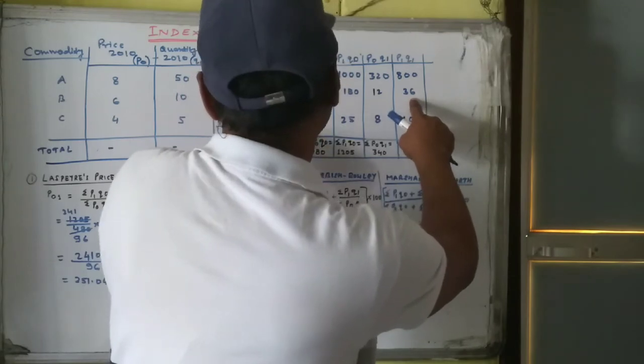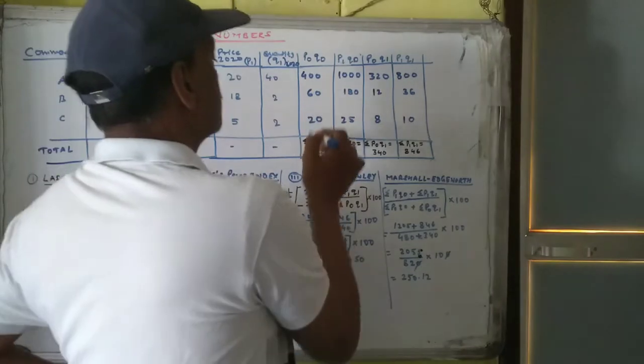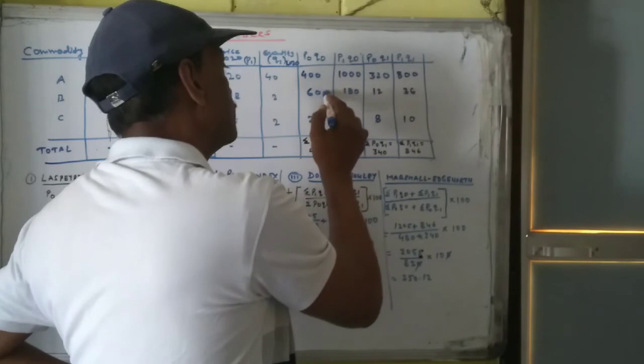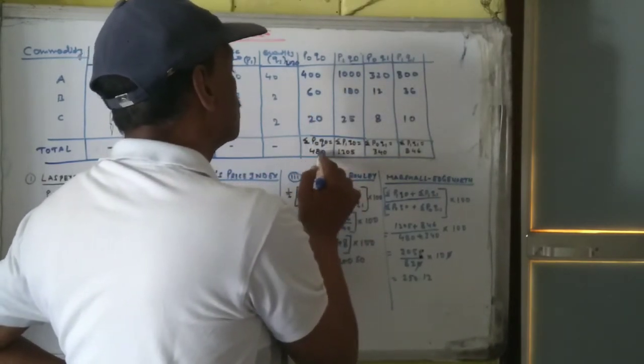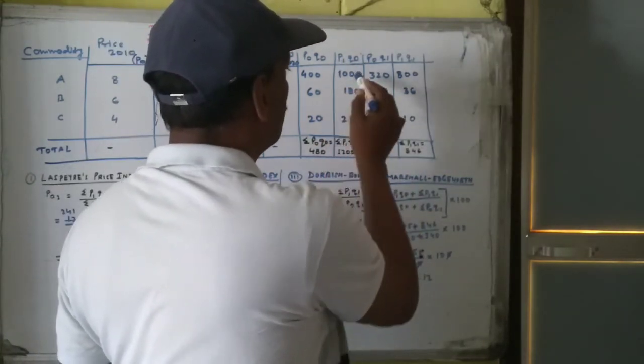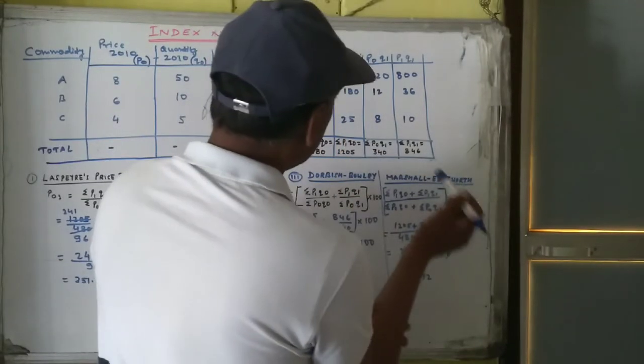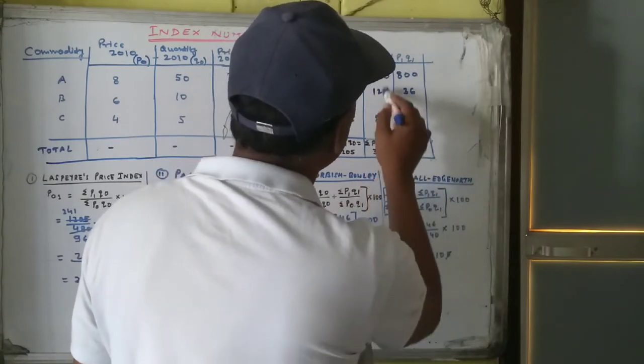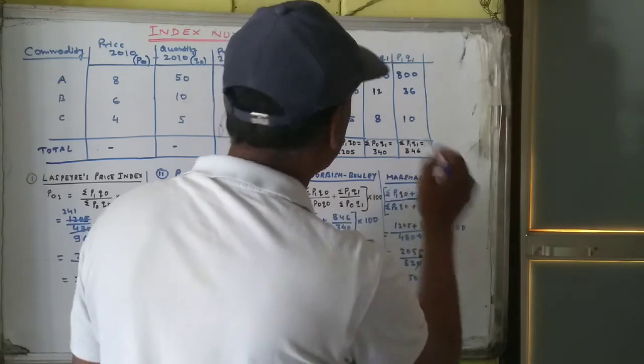Now the total, and it is Sigma P0Q0. Sigma means summation, we have to add all these figures. Sigma P0Q0 is 480. Second one, Sigma P1Q0 will be the sum of this number, 1205. P0Q1, Sigma P0Q1, the total sum is 340. P1Q1, Sigma P1Q1 is 846.